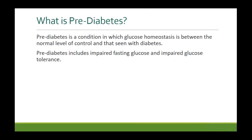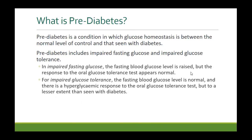What is pre-diabetes? It is a condition in which glucose homeostasis is between the normal level of control and that seen with diabetes. It includes impaired fasting glucose and impaired glucose tolerance. In impaired fasting glucose, the fasting blood glucose level is raised but the response to oral glucose tolerance test appears normal. In impaired glucose tolerance, the fasting blood glucose level is normal, but when you challenge them with oral glucose, they have a hyperglycemic response that is not as severe as in diabetics but not as normal as in healthy people — somewhere in between.